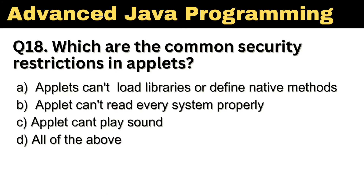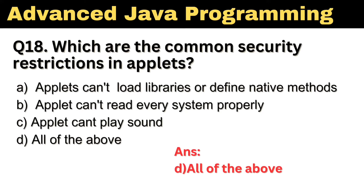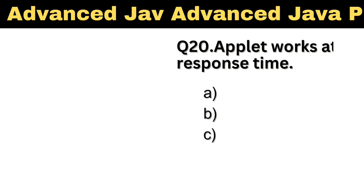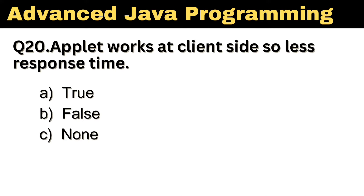Question No. 18: Which are the common security restrictions in Applets? The right answer, Option D, All Above. Question No. 19: What is used to run an Applet? The right answer, Option C, Both A and B. Question No. 20: Applets work at client site, so less response time. The right answer, Option E, True.